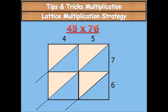So we start by multiplying 5 times 7 is 35. Then 4 times 7 is 28. Then we have 5 times 6 is 30. Then we have 4 times 6 is 24.